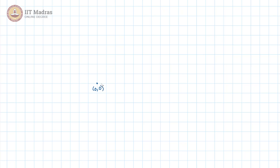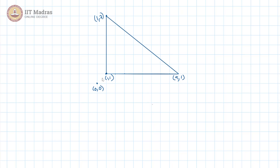If we consider this to be our origin, the triangle is made of the points 1 comma 1, 9 comma 1, and 1 comma 7. So this is our triangle — this is A, this is B, and this is C. You can see that AC is completely vertical; its x-coordinate remains the same, it is 1. And AB is completely horizontal; its y-coordinate remains the same, which is 1. So this is a right-angled triangle.